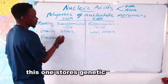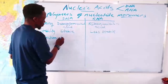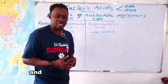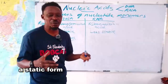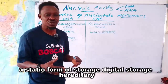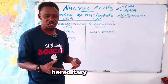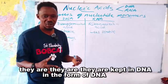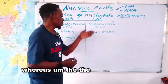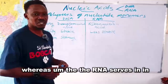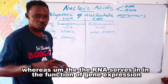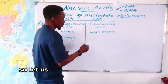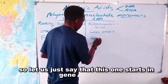In terms of function, DNA stores genetic material. That storage is essentially a static form — hereditary materials are kept in the form of DNA. RNA, on the other hand, serves in gene expression: it is involved in copying the gene and taking it for translation.